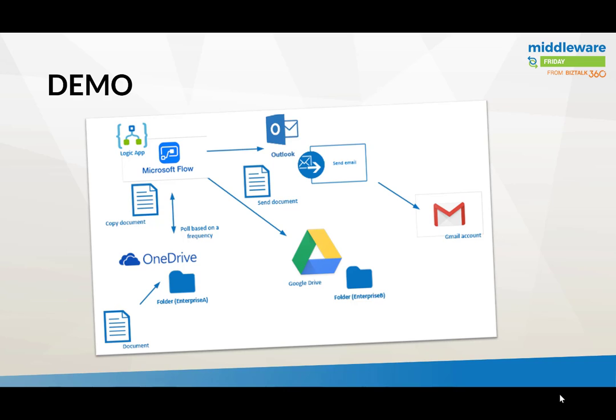Looking at the demo diagram: you have a document that enters into OneDrive and you want to sync it up to Google Drive — let's say it's for a partner scenario. One partner could use OneDrive, the other Google Drive, or maybe it's between two enterprises. One uploads the document into OneDrive and has it synced to another company using Google Drive. You can do this with Microsoft Flow — giving the power to the employee — or hand it to an IT Pro or Developer to set up the process.